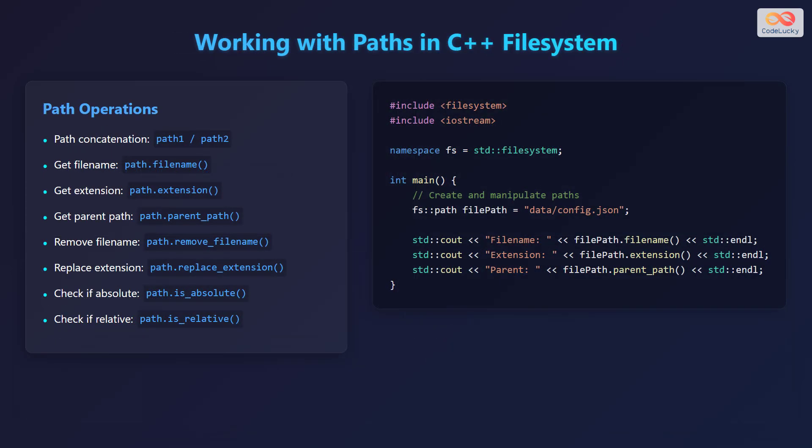Let's explore how to work with paths in the C++ filesystem. Here are some common path operations. Path concatenation can be done using the / operator, like path1 / path2. To get the file name, use the filename() method. To get the extension, use the extension() method. To get the parent path, use the parent_path() method. To remove the file name, use the remove_filename() method. To replace the extension, use the replace_extension() method.